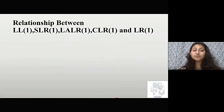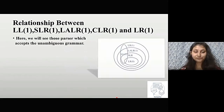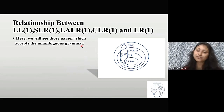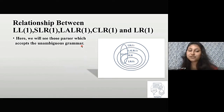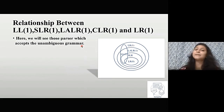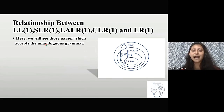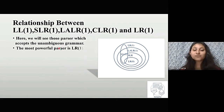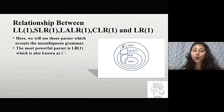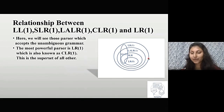Regarding the relationship between LL1, SLR1, LALR1, CLR1, and LR1, we need a diagram. Here we will see those parsers which accept only unambiguous grammar. The operator precedence parser can accept ambiguous grammar, but these other parsers assure they will not accept ambiguous grammar. The most powerful parser is LR1, also known as CLR1. It is the superset of all others — all other parsers are subsets of LR1.